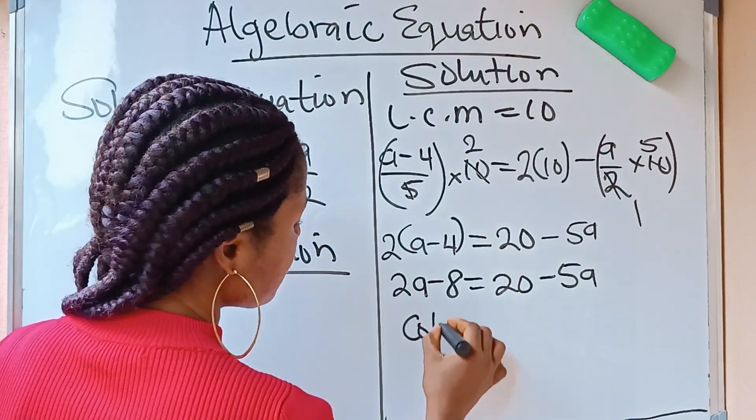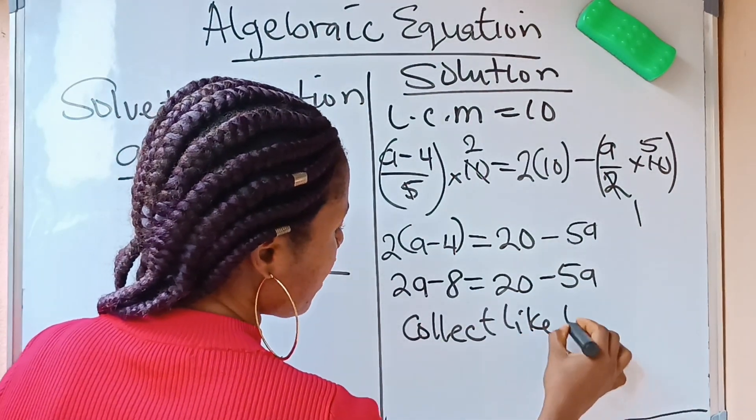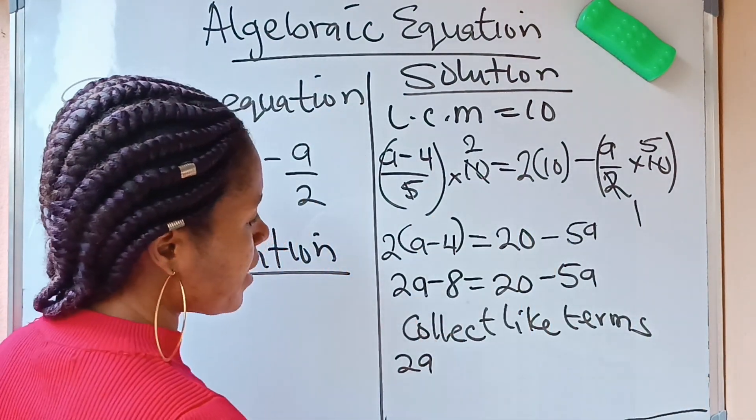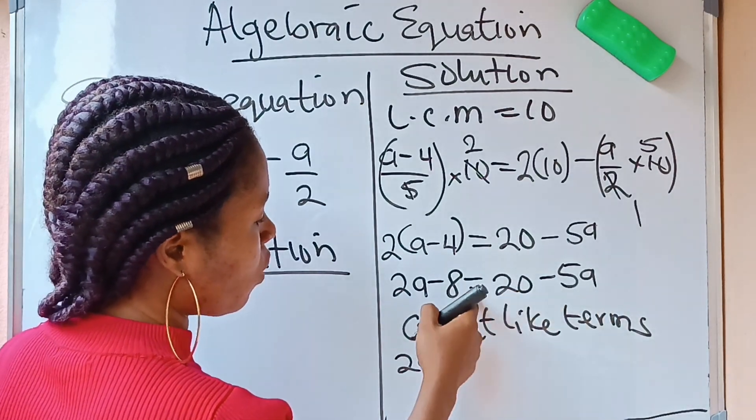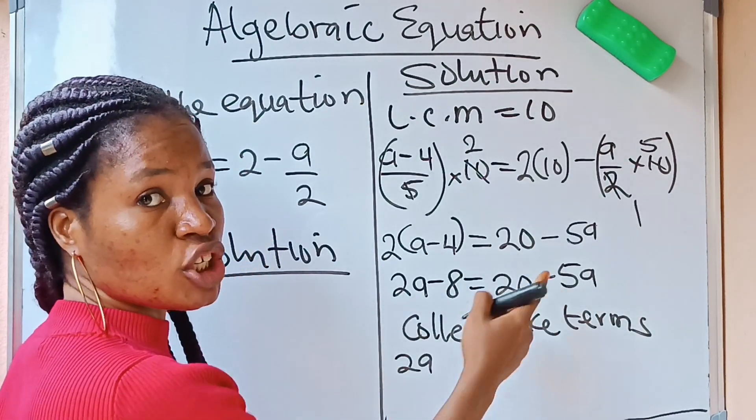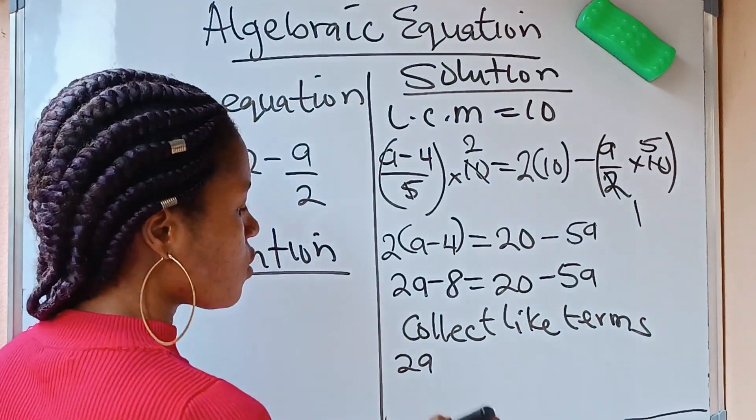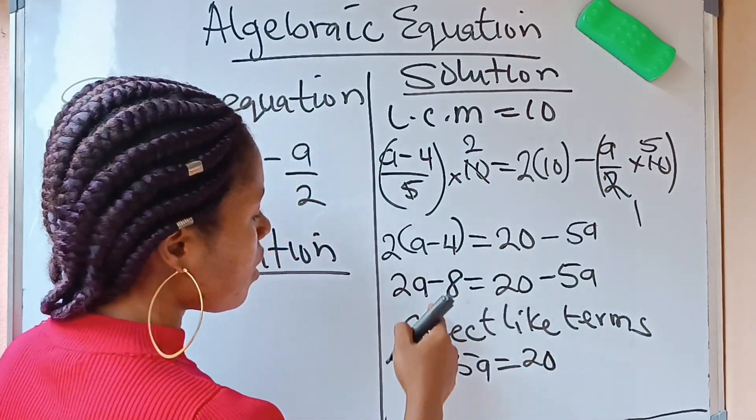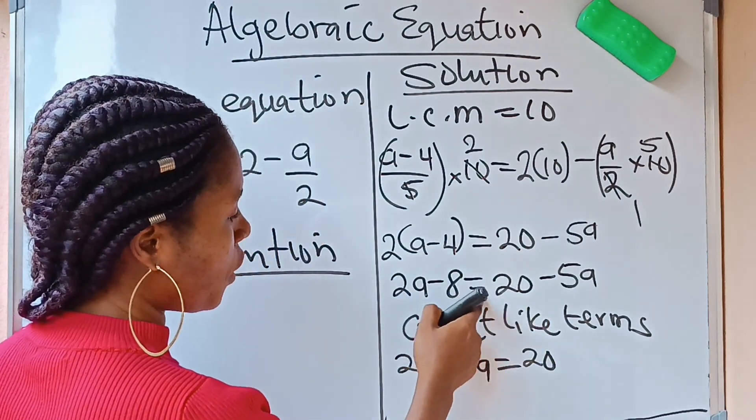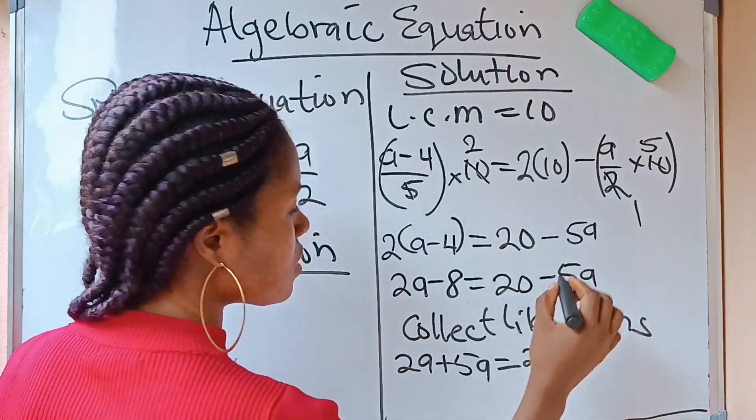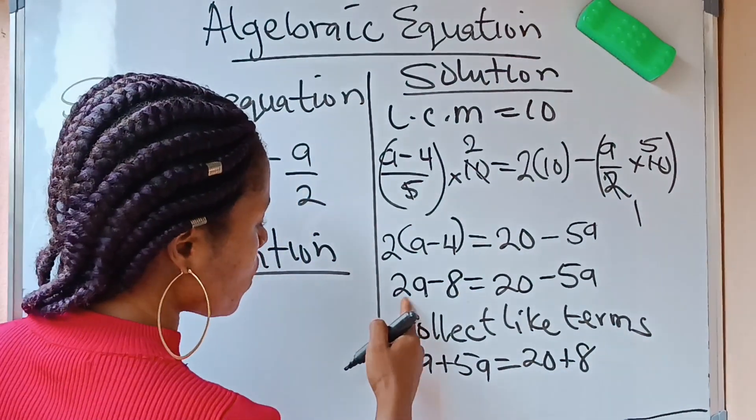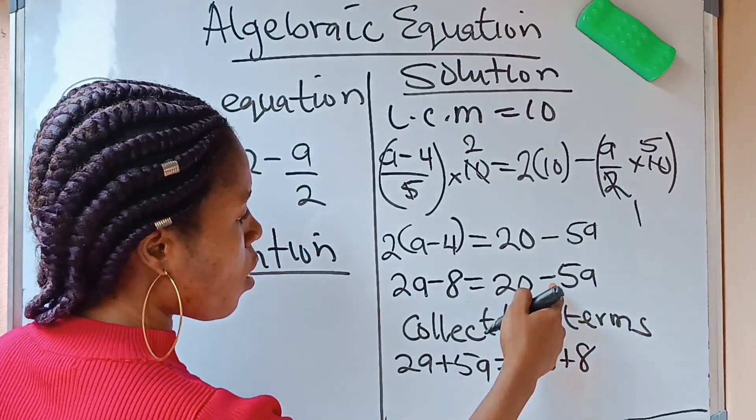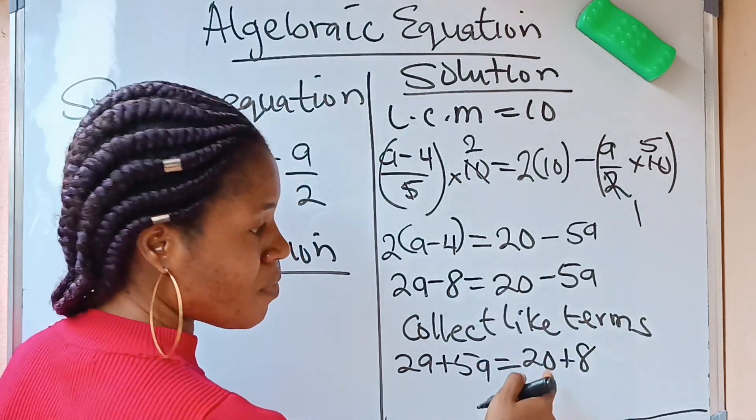Now, we are going to collect like terms. This 2A now, the like term is minus 5A. But, this minus 5A will cross this equation to meet this 2A. This minus sign will change to plus sign. So, you are going to have plus 5A here.